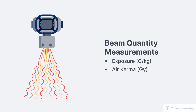When discussing x-ray beam quantity or intensity, we use specific measurements. Quantity is measured as exposure in units of coulombs per kilogram, or we can measure the quantity — that's the intensity — as air kerma in units of gray. These measurements basically tell us how much radiation there is in air.